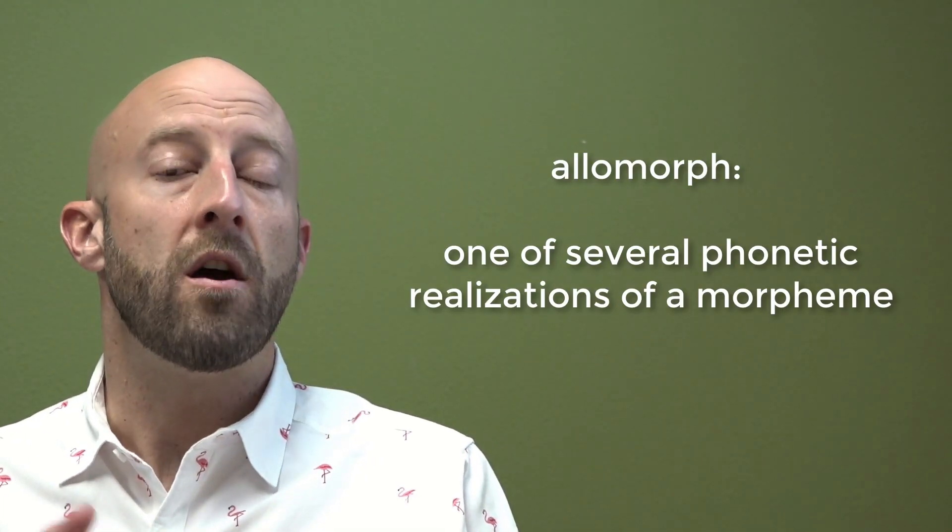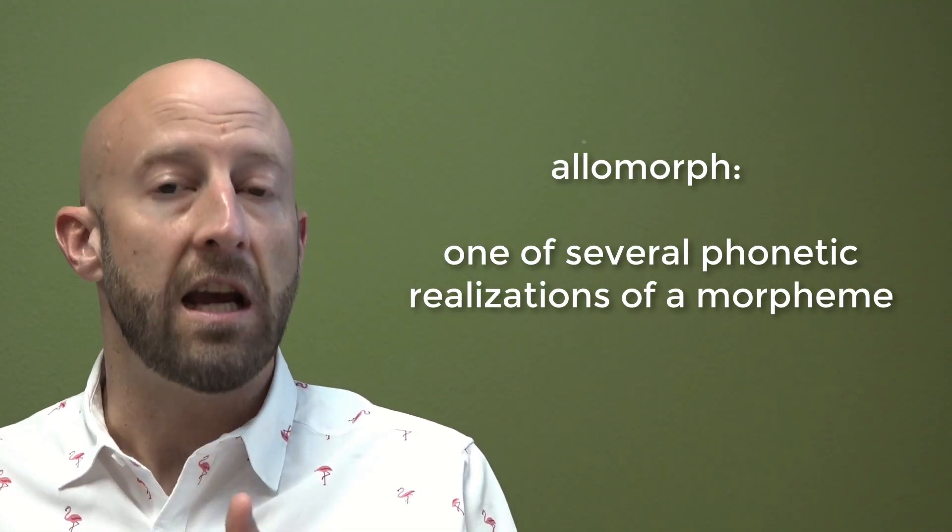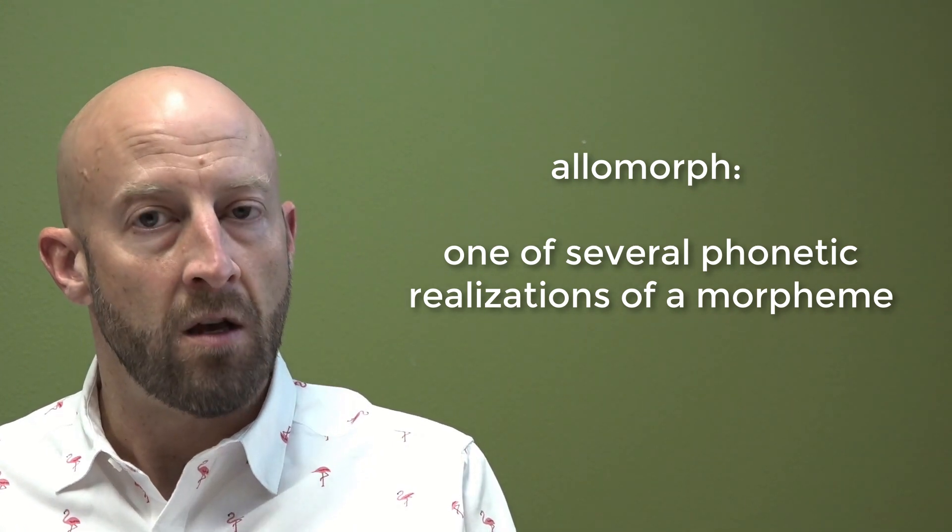So this will mean then that an allomorph is one of several phonetic realizations of a morpheme. Now all of those definitions aside, those are probably not very helpful. Let me try to illustrate the difference between a morpheme and an allomorph using a few examples.